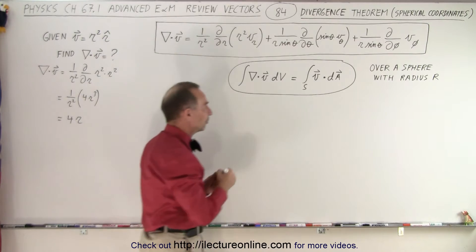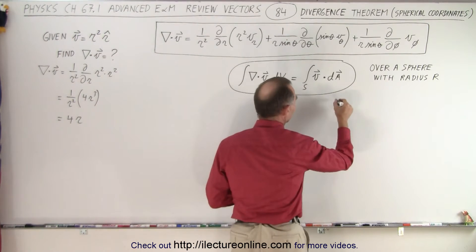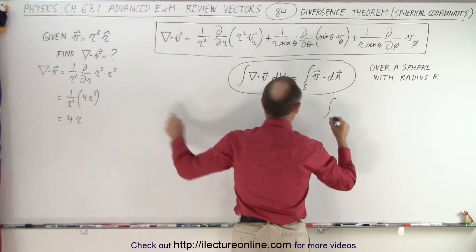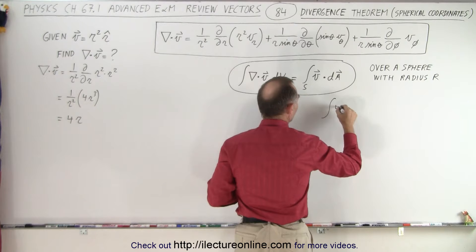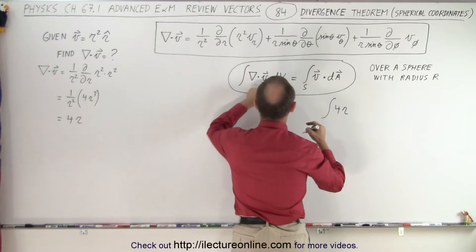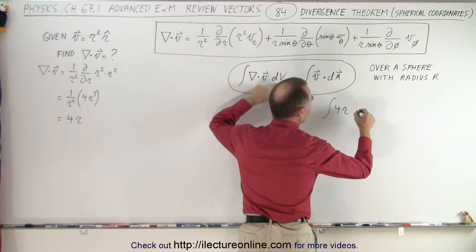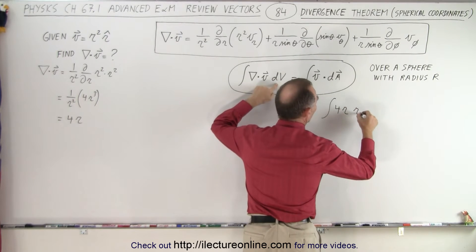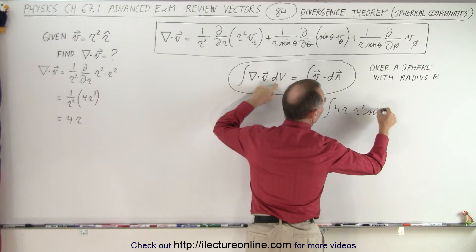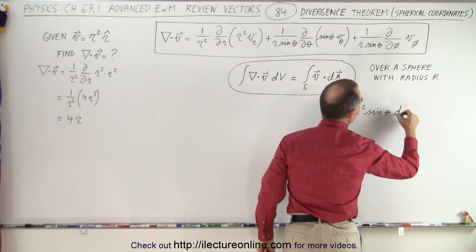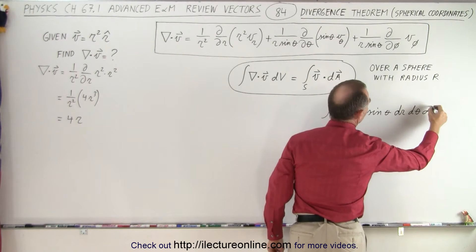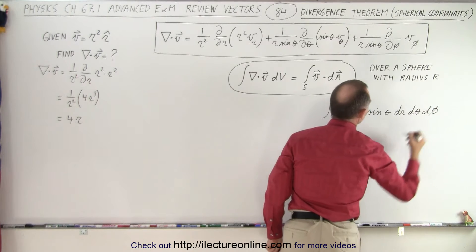Let's start with that first. We're going to integrate the divergence of vector v, which is 4r, times the volume element, which is r squared sine of theta dr dθ dφ.